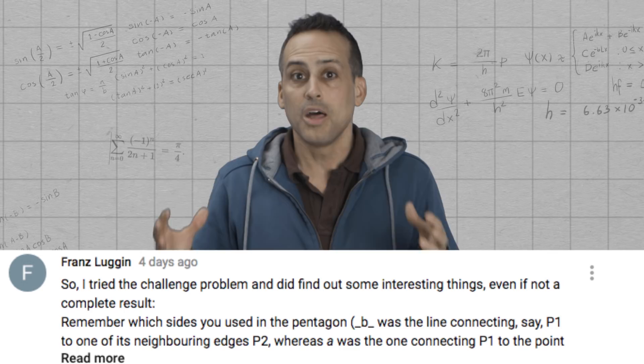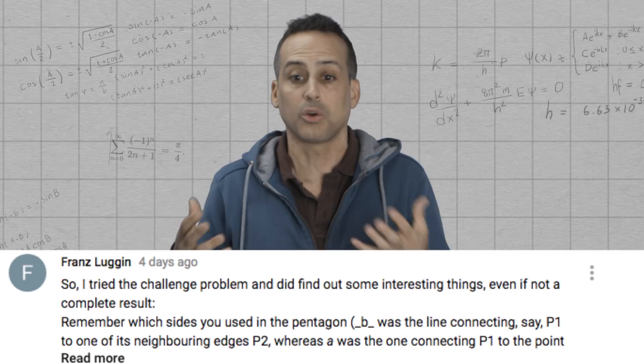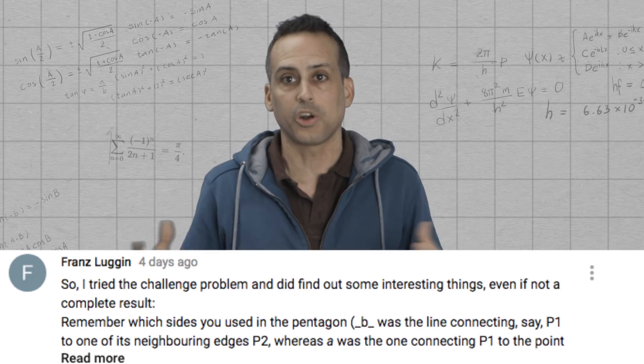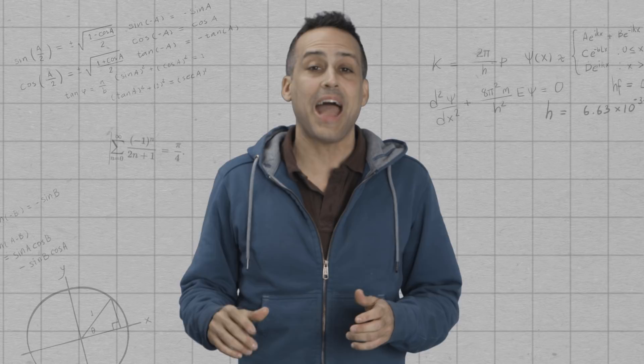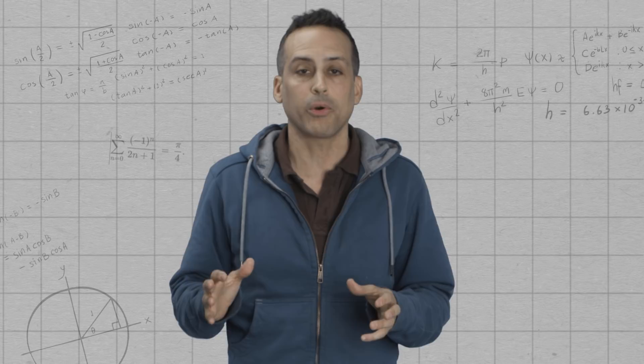But as Franz Luggen pointed out, setting up that solution and actually proving that it has some whole number pair that actually satisfies it or proving that it doesn't is a hard thing to do. And so far, a lot of you have done computer searches that are pretty exhaustive, but that's not the same thing as having a complete proof one way or the other. And by the way, we've added a link to that paper in the description of the Beyond the Golden Ratio episode, the 2007 paper. So if you want to check it out, you can find it there.